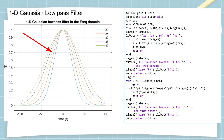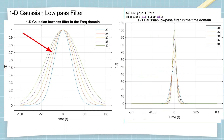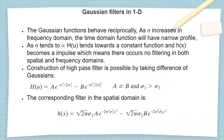From the graph it is evident that as σ grows the bell curve grows in the frequency domain and conversely shrinks in the time domain. The Gaussian curves behave reciprocally: as σ increases in the frequency domain, the time domain function has a narrower profile. As σ tends to infinity, h(u) tends toward a constant DC function and h(x) becomes an impulse, meaning no filtering occurs and the input is the same as the output.